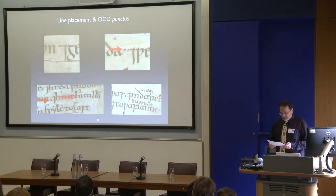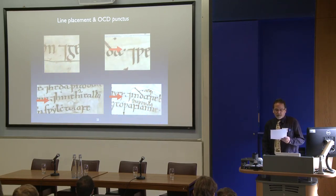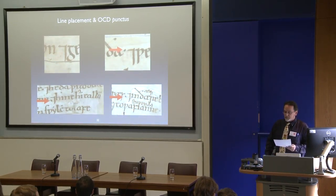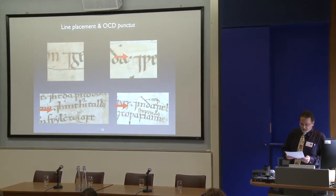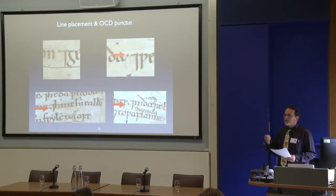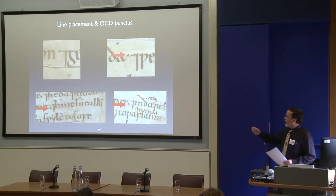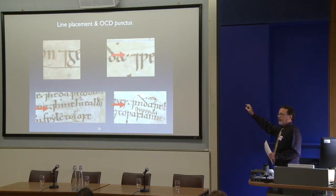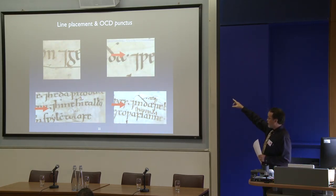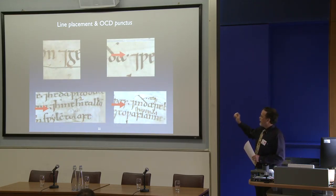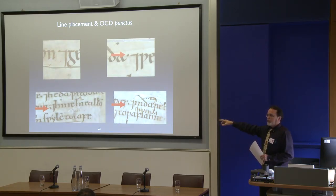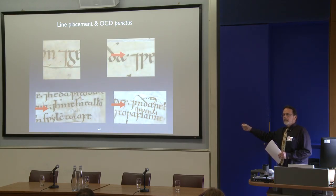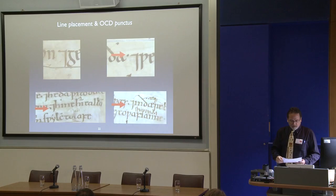Placement relative to the baseline: in determining whether a punctus is original or an intervention, it's sometimes possible to distinguish between original scribal practice. In CULKK318, for example, this is usually a media distinctio, whereas Tremulous had a tendency to put his on the line. And I would include in this category what I refer to as his OCD punctus — that is, when he adds a punctus before especially the Tyronian nota, just out of habit. You can see examples from Cotton Otto C1: the original scribe didn't bother to put a point in front of the 'and' abbreviation, whereas the Tremulous Hand would consistently apply a point in that position, usually on the baseline.